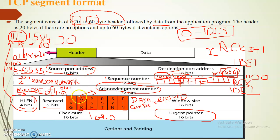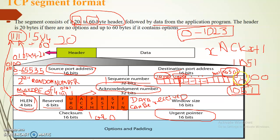If the ACK flag is 1, then we know this packet also contains an acknowledgement number. The acknowledgement number, as already discussed — if you send bytes 1000 to 1050, then it will acknowledge 1051.